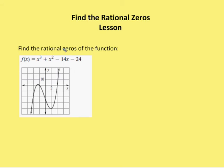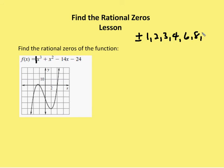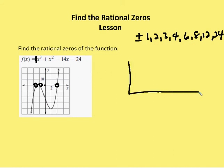Moving on to the second-to-last question, we want to find the rational zeros of the function. The first thing we're going to do is find the factors of the constant and divide them by the factors of the leading coefficient. The leading coefficient is just one, so I'm left with possible zeros as the factors of the constant: plus or minus one, two, three, four, six, eight, twelve, and twenty-four. I consult the graph and look for where it crosses the x-axis — where y equals zero. It looks like a positive four, so let's set up our synthetic division system and choose four as the first possible zero.